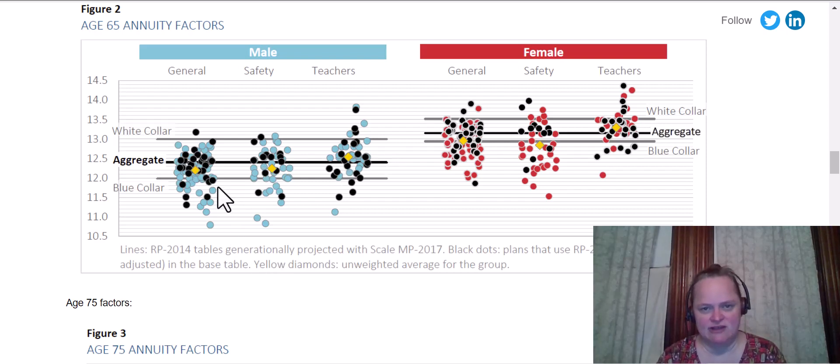The yellow diamond is the unweighted average for the group, each group. The black dots use a particular mortality table, which is RP-2014, as their base table. But obviously, it can have been projected using certain mortality improvement, yada yada. But then you're saying, okay, but then why are they spread out horizontally? And that's what the jitter chart is.